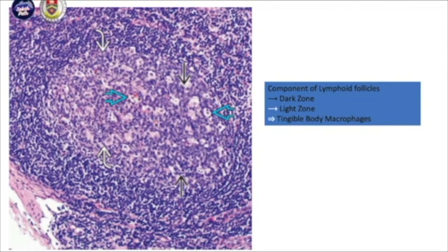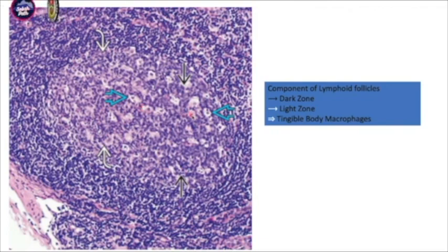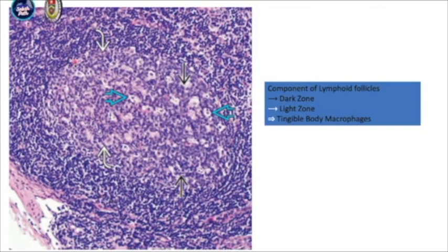If you see a distinct light zone and dark zone, these are the characteristics of a benign lymph node together with tingible body macrophages. Usually this lymph node is rimmed by a well-defined mantle zone, which is composed of mature lymphocytes.